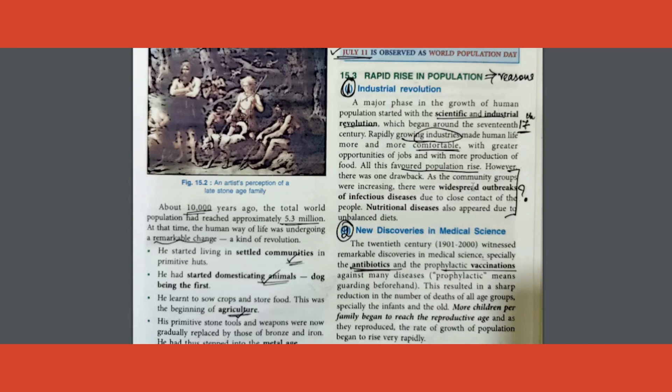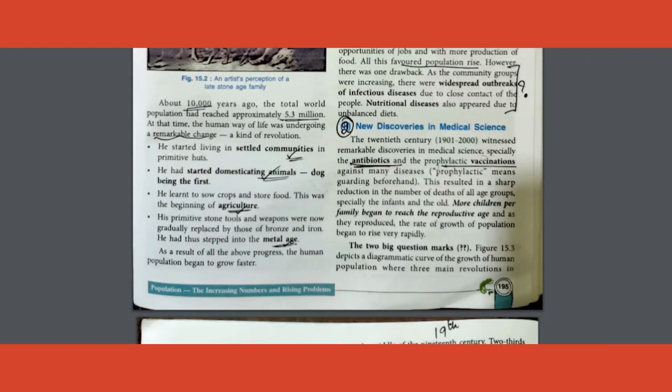One question from here: what led to widespread outbreaks in community groups? Answer is due to close contact of people. Another question from here: what is meant by prophylactic? It means guarding beforehand. One MCQ you can expect.